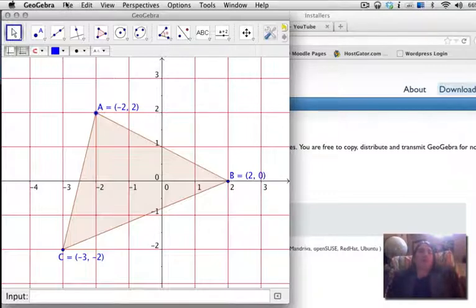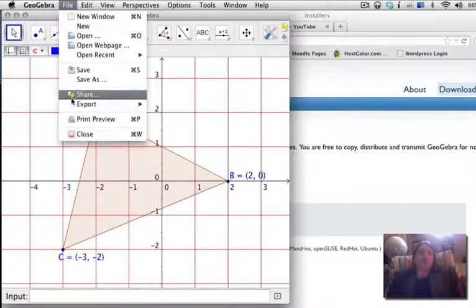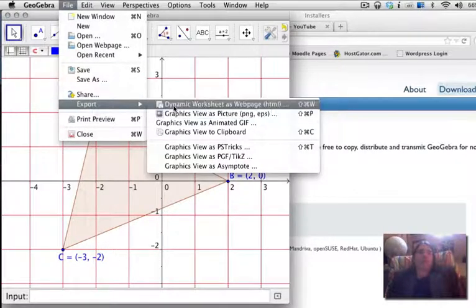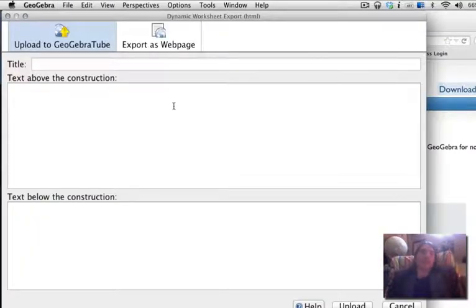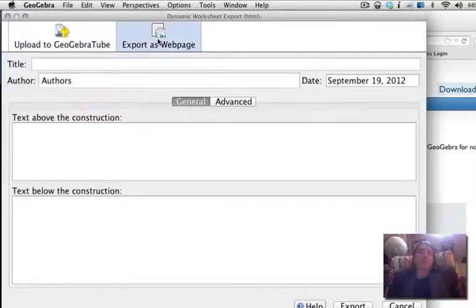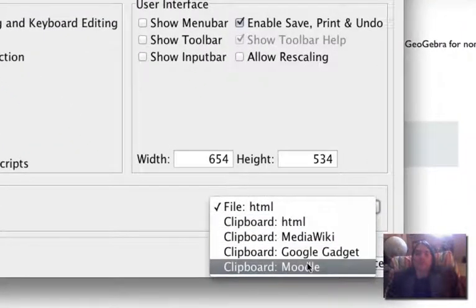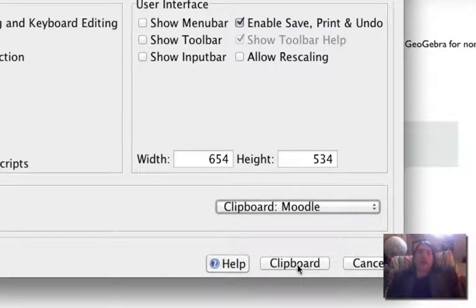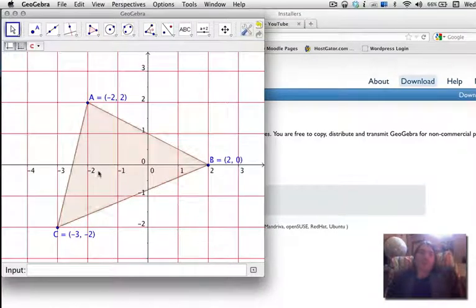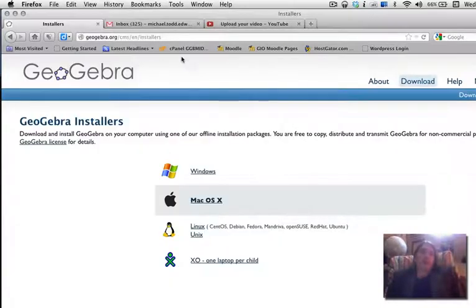So I'm going to go within the GeoGebra software, under File, and export this as HTML. Since Moodle is HTML, we're going to export this as HTML. I'm exporting the sketch as a web page, and under the Advanced tab, I'm going to export this file to the clipboard as Moodle code. And click Clipboard. What this does, it takes the entire contents of the sketch and copies it to the clipboard on my computer.